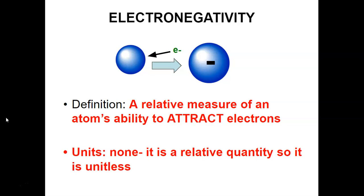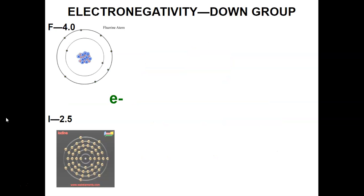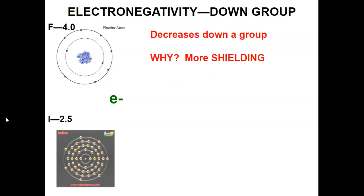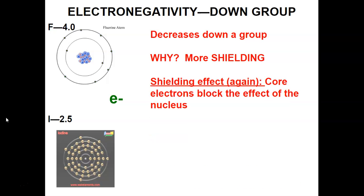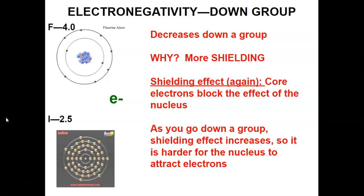Our last major trend is electronegativity — a relative measure of an atom's ability to attract electrons. It's unitless; it's just a relative quantity with no units. As I go down a group, electronegativity decreases, because there's more shielding. Iodine has so many more occupied energy levels than fluorine, so those energy levels block the nucleus from attracting more electrons. Fluorine only has two occupied energy levels, so there's much less shielding and it's much easier for fluorine to attract electrons.